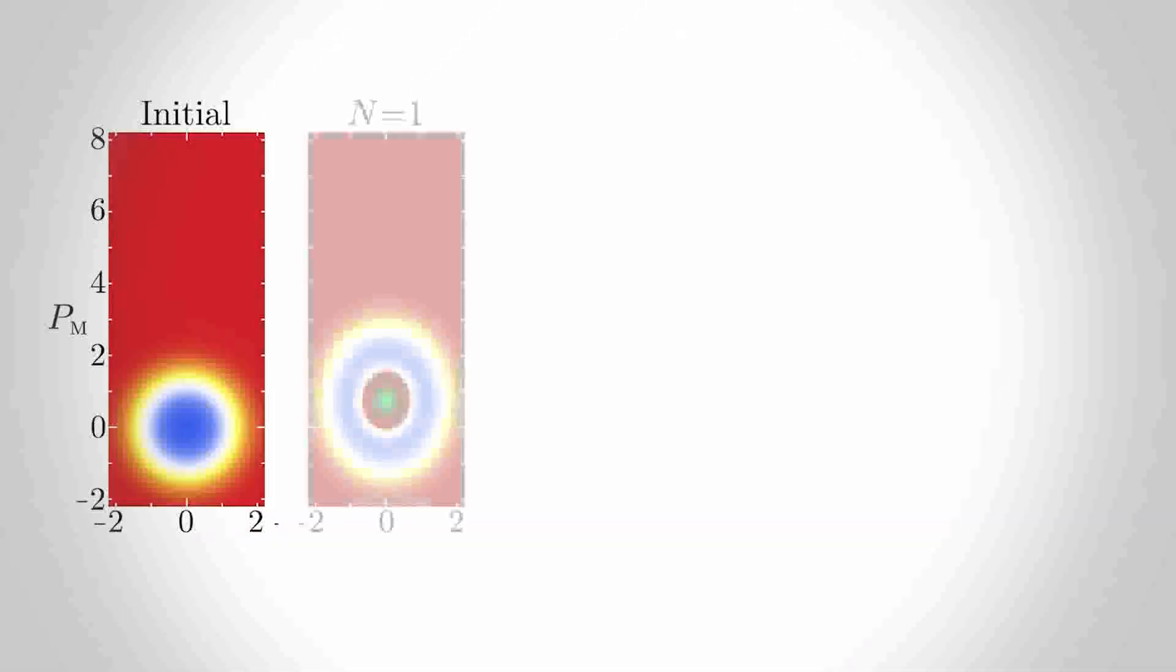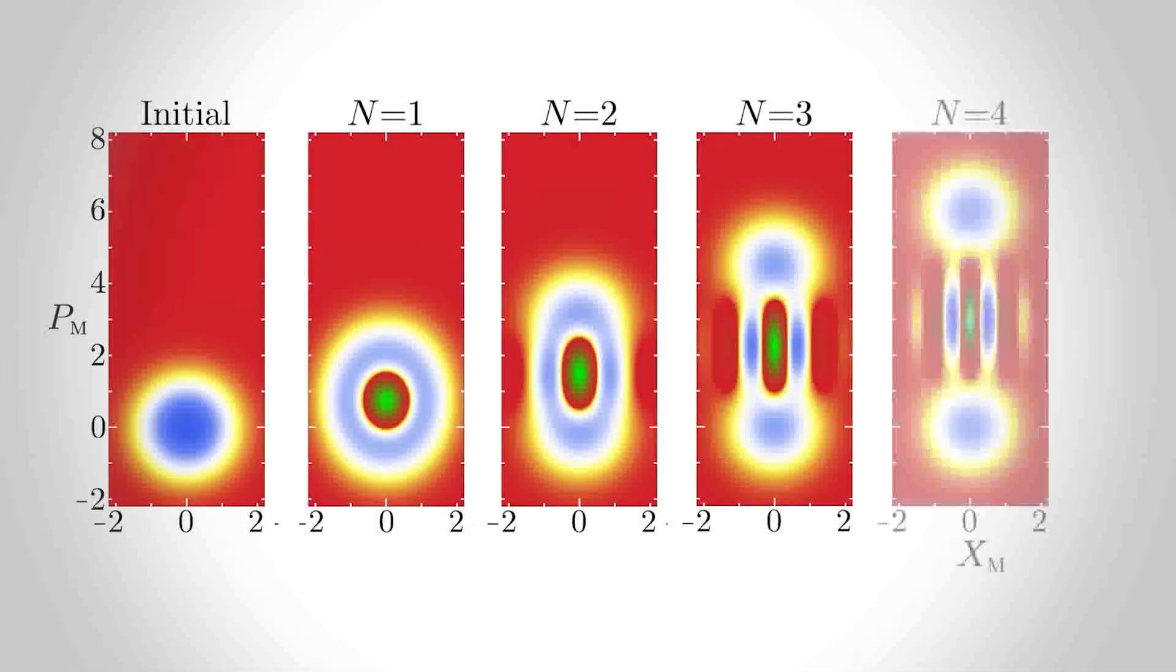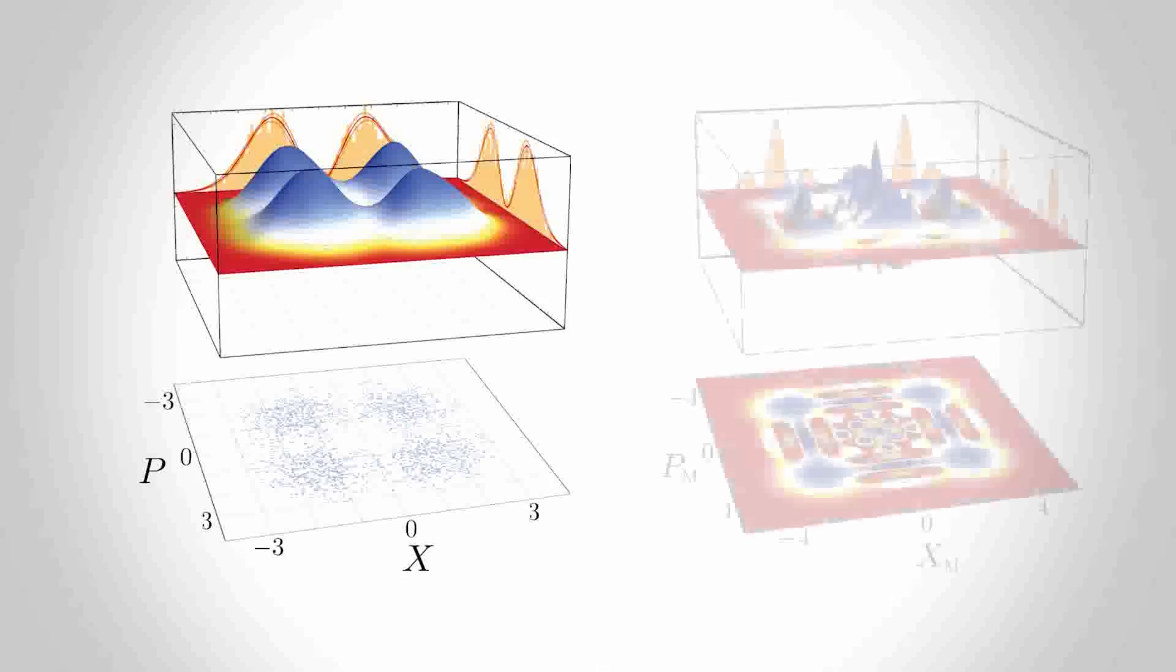For example, our method could produce Schrödinger-Cat states of increasing size, or even quantum compass states, by changing only the optical measurement.